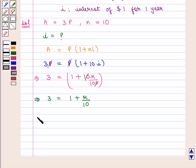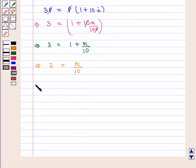So we have 3 minus 1, that is 2, is equal to R upon 10, which implies that R is equal to 20.